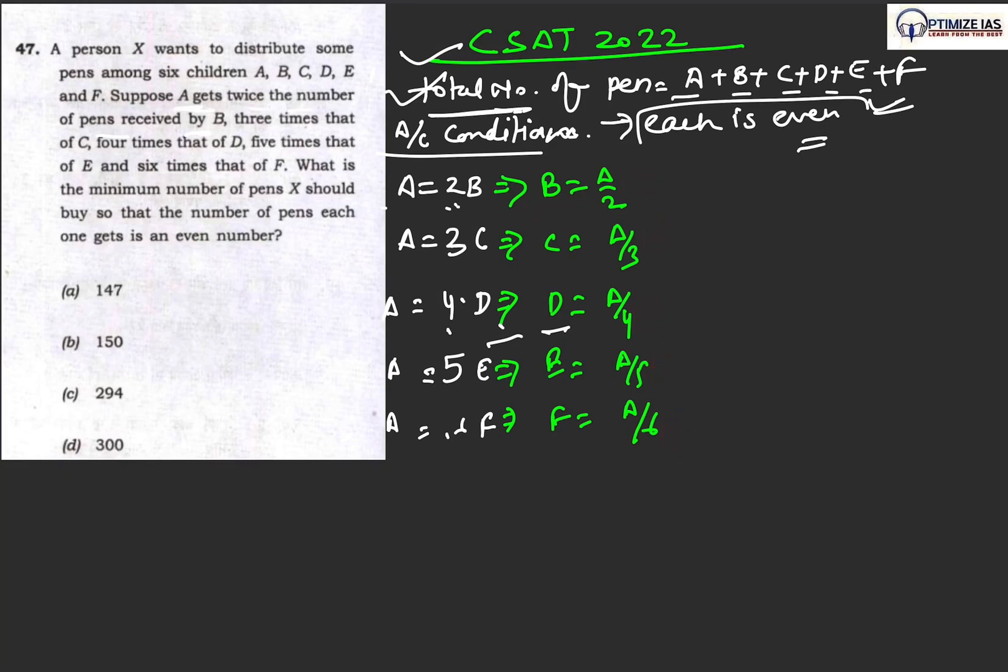Now we have to assume some number then only we can proceed. So let's assume the value of A as LCM of 2, 3, 4, 5, and 6. Why this value? Because this is the value we are having in our equation: 2, 3, 4, 5, 6. So LCM of this number will give you a result of 60.